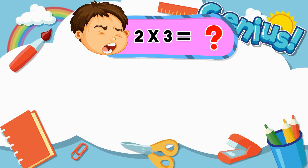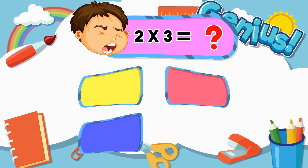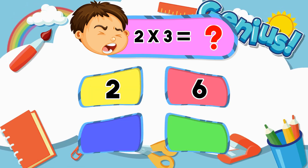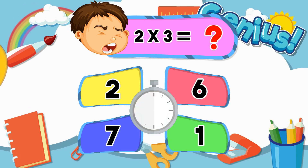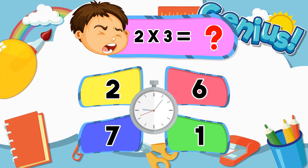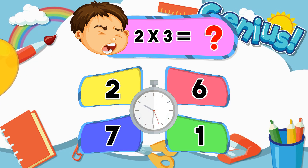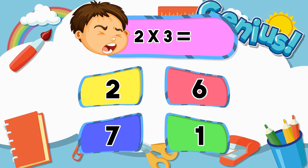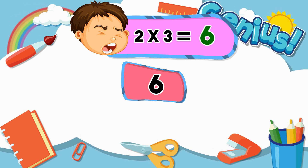What is 2 times 3? 2, 6, 7, 1. [Answer:] 6.